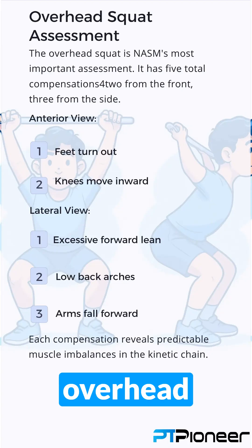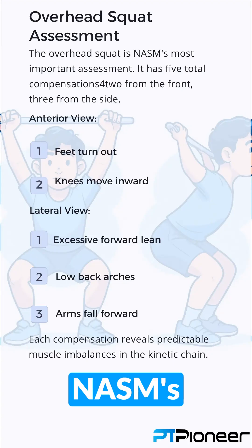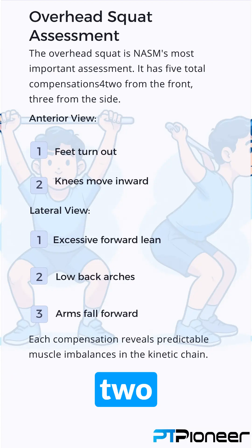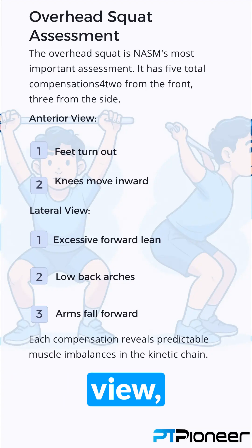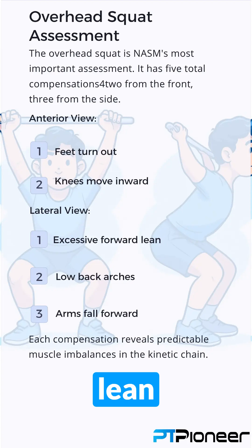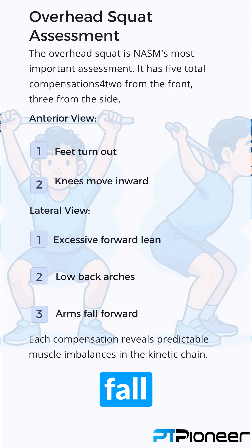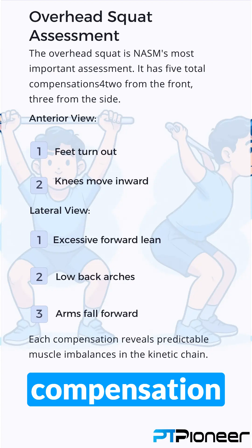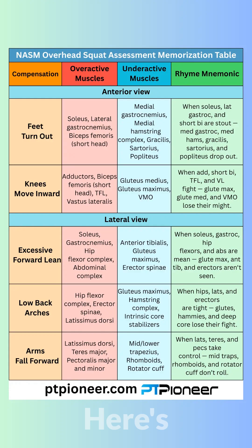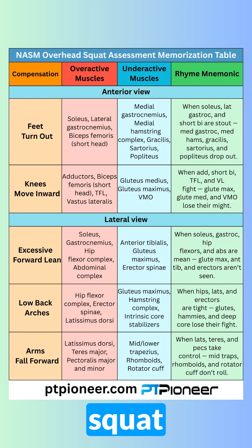Number five: Overhead squat assessment. The overhead squat is NASM's most important assessment. It has five total compensations — two from the front and three from the side. Anterior view: feet turn out, knees move inward. Lateral view: excessive forward lean, low back arches, arms fall forward. Each compensation reveals predictable muscle imbalances in the kinetic chain. Here's the easy mnemonic table to remember the overactive and underactive muscles for the overhead squat assessment. Screenshot it now.